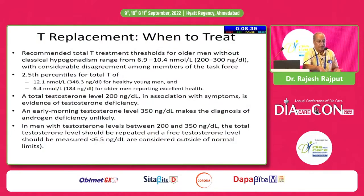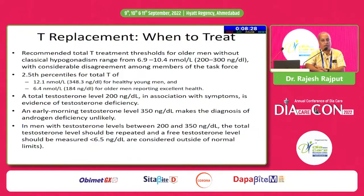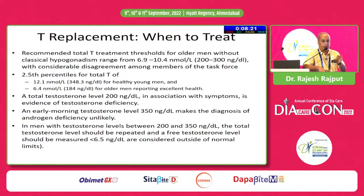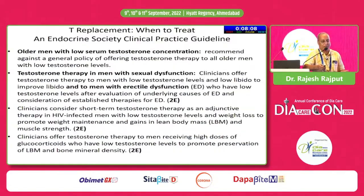When to replace? Standard recommendations: if testosterone is more than 350 nanograms per deciliter, any degree of hypogonadism is effectively ruled out. If testosterone is less than 200 nanograms per deciliter, it requires both investigation and treatment. Between 200 and 350 is a gray zone requiring careful judgment — ideally refer these patients to experienced senior colleagues.